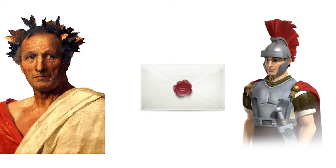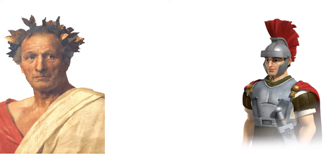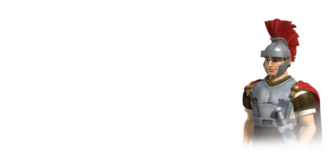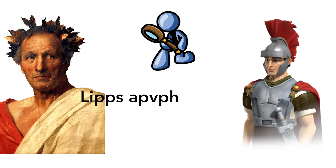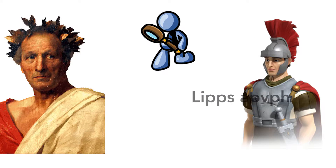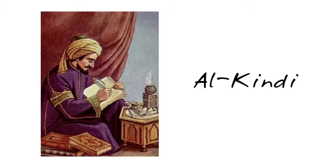We then pass this ciphertext along to the recipient, who also has our key of 4, and they shift each letter back that many places to get the plain text. Anyone in between that tries to read it just gets garbled, unusable junk. The cipher actually worked before a linguist and mathematician finally discovered a way to crack it near 200 years later.